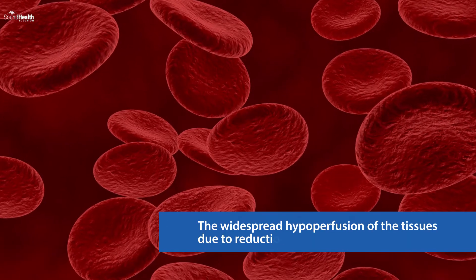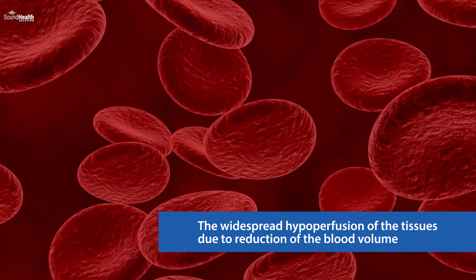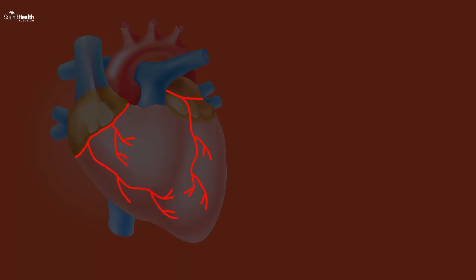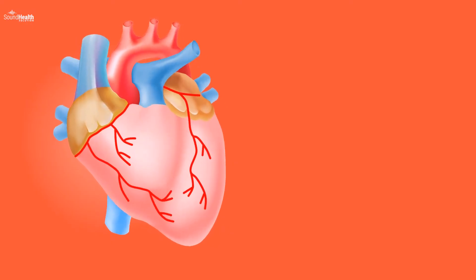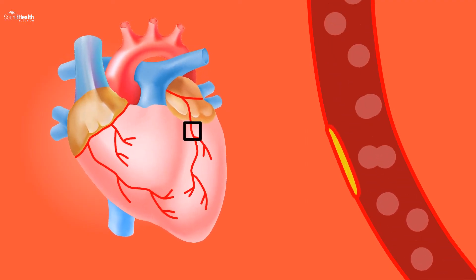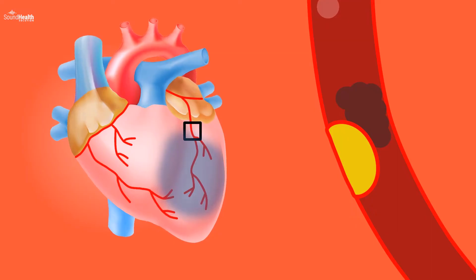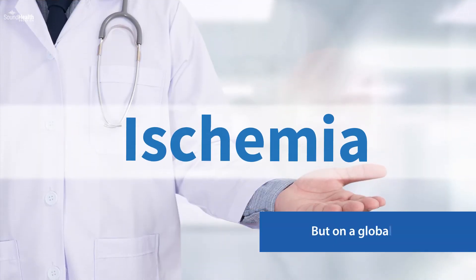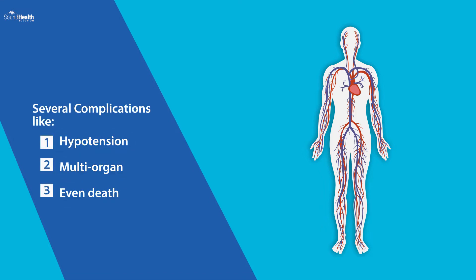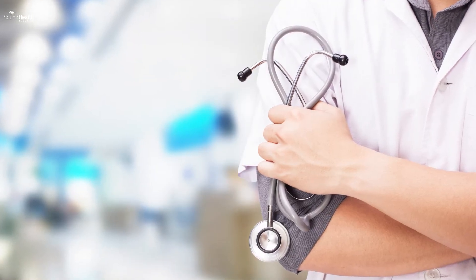So let us begin. What is shock? Shock is defined as the widespread hypoperfusion of the tissues due to a reduction of the blood volume or cardiac output. To put it simply: we've all heard about ischemia, where there's lack of blood flow to a specific area of tissue — like in the heart during a heart attack, where the coronary artery gets blocked and localized tissue doesn't get enough blood and oxygen. Well, shock is just like ischemia but on a global scale, meaning it's a whole-body circulatory failure where blood flow to the tissues is halted, leading to complications like hypotension, multi-organ failure, and even death. Hence, shock is a medical emergency and requires immediate medical help.